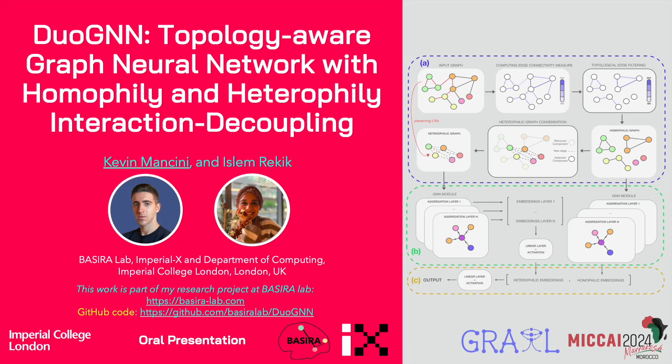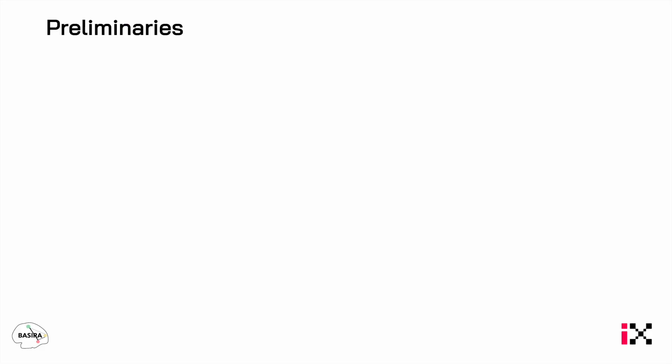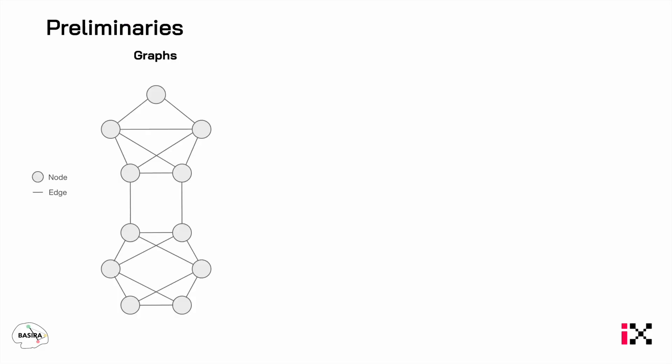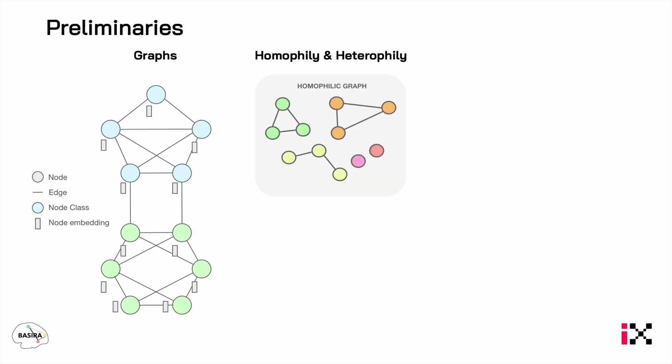Today I will present DuoGNN, which is a novel graph neural network. We define a graph as a set of nodes and edges, where the node color denotes the node class and these are the node embeddings. Homophily is a property of a graph for which edges will likely connect nodes with the same class. The opposite is heterophily, and a heterophilic graph will likely have edges between different classes.